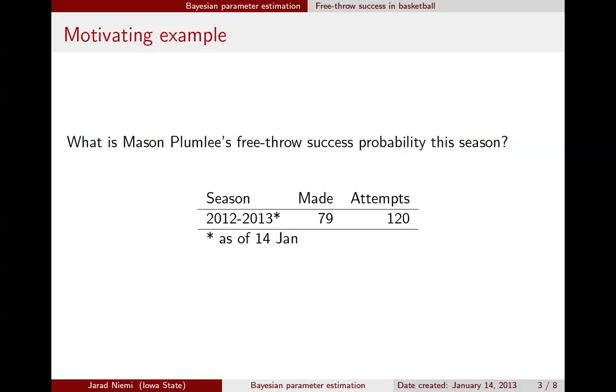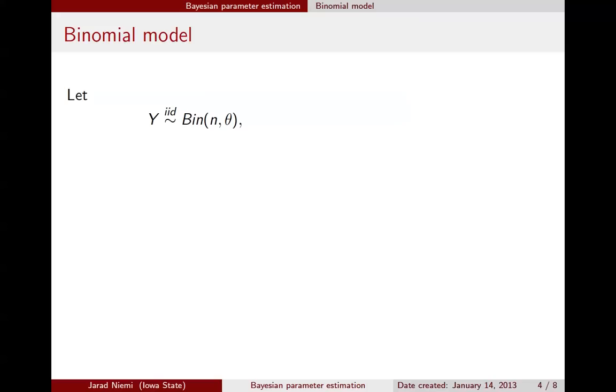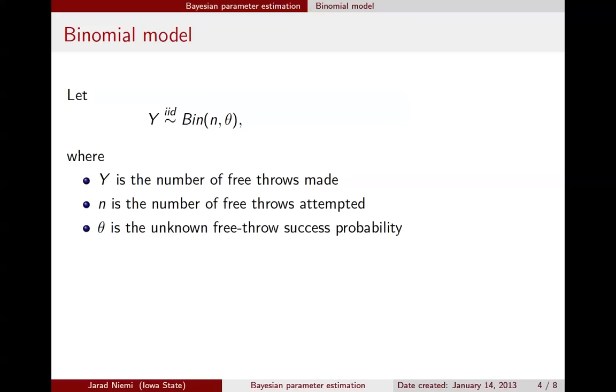A common model for these situations would be the binomial model. Here we assume, or we denote, Y is the number of free throws that he made, n is the number of free throws that were attempted, and theta is the success probability between those free throws. I've written iid here. That was from a previous version of the slide. Of course, there's no extra random variables, so Y is just binomially distributed with n and theta.